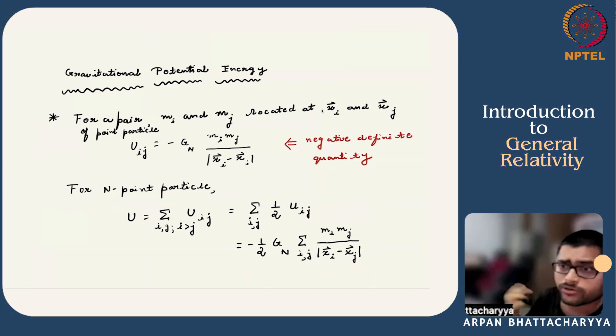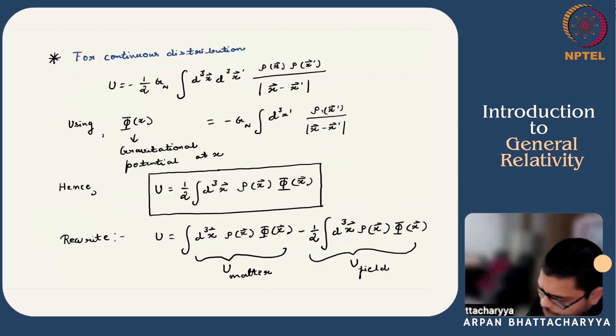Similarly, we can also generalize this for the continuum case. For continuous distribution, the gravitational potential energy is given by this. You just have to replace the sum by integration and mi by ρ times d³x, and you get this expression. Recall that the gravitational potential at point x is given by this. Using this, you can rewrite the expression for capital U as an integral over ρ times Φ.